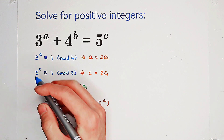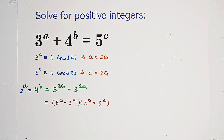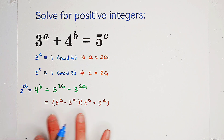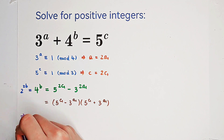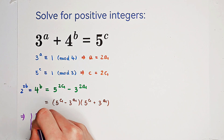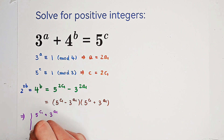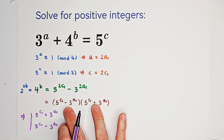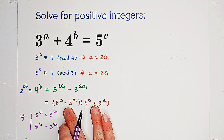Because 4 to the power of b equals 2 to the power of 2b, the product of these two terms equals a power of 2. So what does it mean? It implies that both 5 to the power of c1 plus 3 to the power of a1 and 5 to the power of c1 minus 3 to the power of a1 must each be equal to a power of 2.